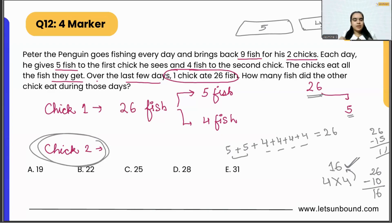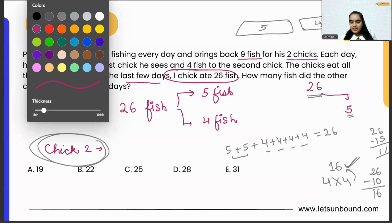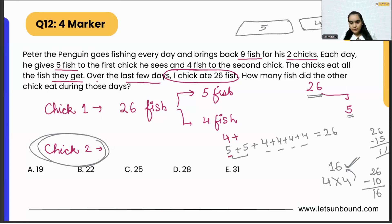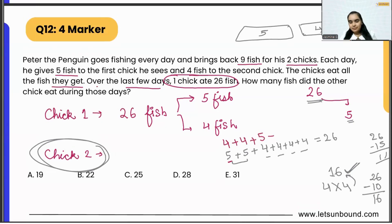What we need to do is we can just replace five with four and four with five. Because if Chick 1 is getting four, then Chick 2 will get five fish to eat. If Chick 1 is getting five, then Chick 2 will get four fish to eat. That's it. Now you can add this and you will get your answer.